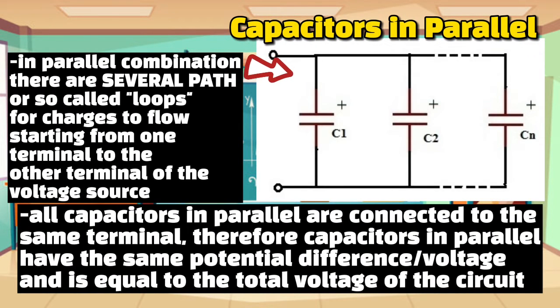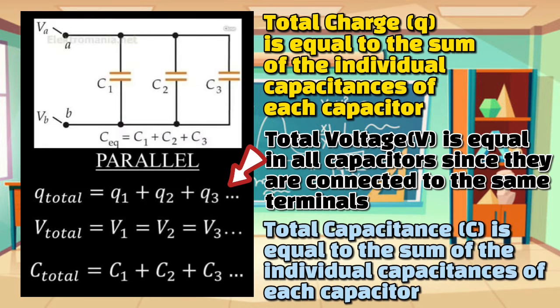Looking into illustrations for parallel capacitors, you notice that there are several paths or loops for charge to transfer from one terminal to another. In parallel combination, all capacitors are connected to the same terminals. With this, capacitors in parallel have the same potential difference or voltage between plates, and it is also equal to the total voltage of the circuit. The following relationships apply for parallel capacitors. The total charge Q is equal to the sum of the individual capacitances of each capacitor.